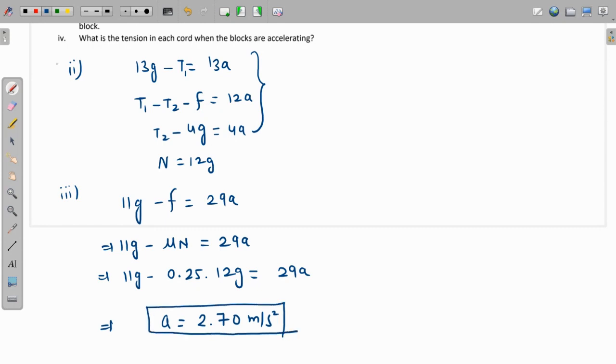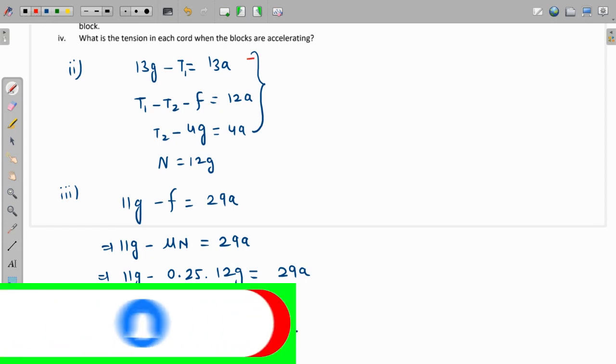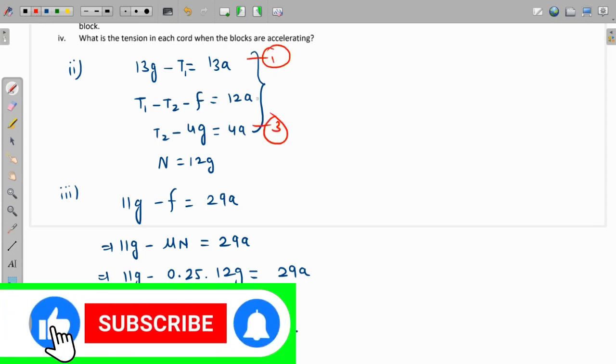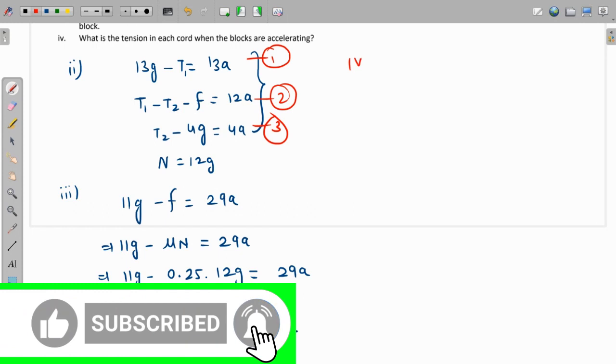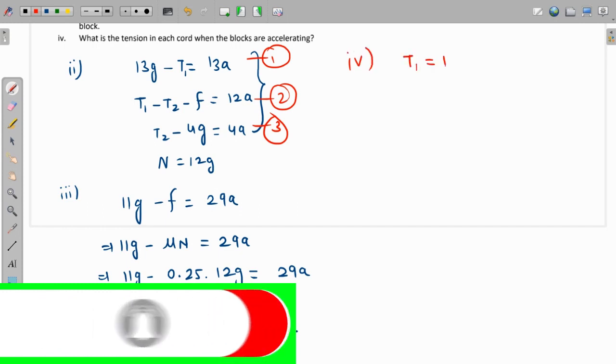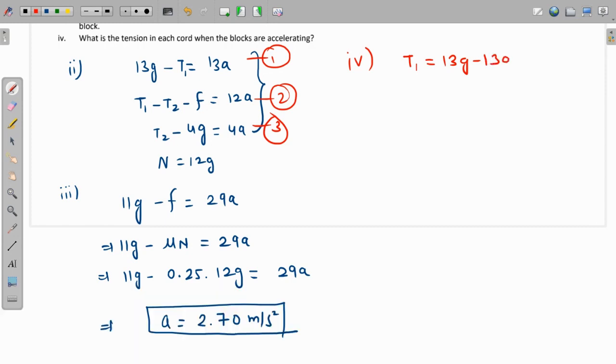That answers the third question. And using equation 1 and equation 3, we can get the tension as well. Using equation 1, T1 is going to be 13g minus 13a. So we already have the value of a, so we'll just substitute that: 13 times 9.8 minus 13 times 2.7. So this value is going to come out as, times 13, which is coming as 92.26 Newtons.